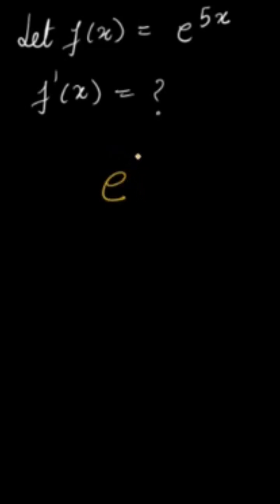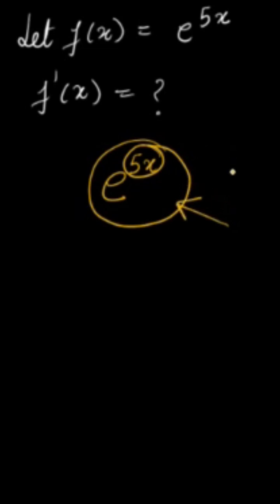So here two functions are there. First of all exponential function which is e raised to power 5x, and then 5x which is polynomial function. So two functions. First of all we will find derivative of e raised to power 5x. So this full we have to consider, then 5x. So how we will write it?